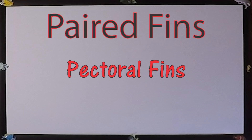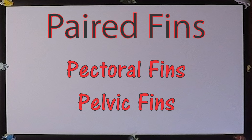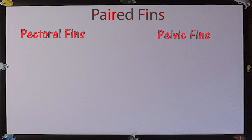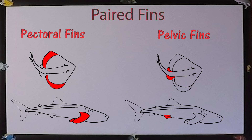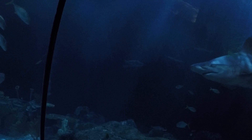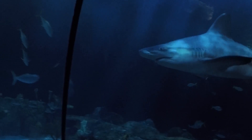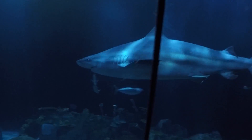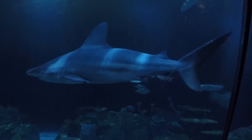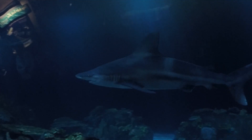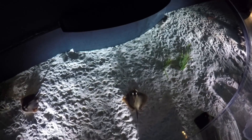The paired fins are the pectoral and pelvic fins, and as the word paired implies, there are two fins comprising the pectoral fins and two fins comprising the pelvic fins, sometimes called ventral fins. Sharks cannot individually move their pectoral fins like bony fishes can and are reliant on moving their entire upper body. Most batoids have the anterior part of their pectoral fins conjoined with the head, forming a large rounded shape called a disc.